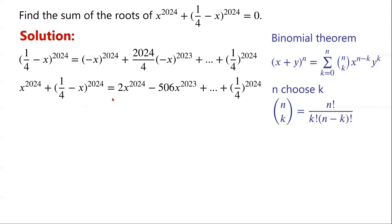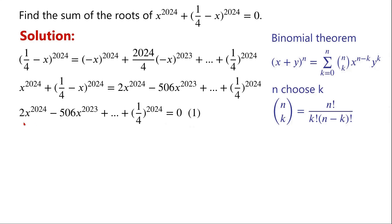So the left-hand side of the given equation simplifies, and the given equation can be written as 2x to the power of 2024, minus 506x to the power of 2023, plus further terms, plus one quarter to the power of 2024 equals 0.